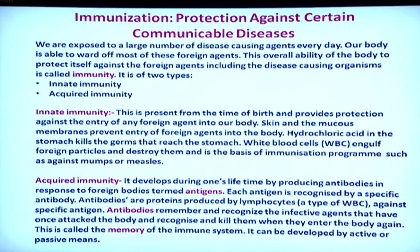Communicable diseases are preventable since pathogens are involved — we can take care that these pathogens do not infect a healthy person. We are exposed to large numbers of disease-causing agents every day, but our body is able to ward off most of these foreign agents. This overall ability of the body to protect itself against foreign agents including disease-causing ones is called immunity. Immunity can be of two types: innate immunity and acquired immunity. Innate immunity is present from the time of our birth.